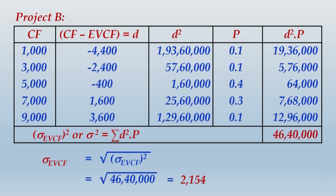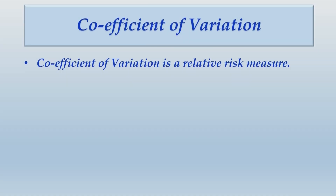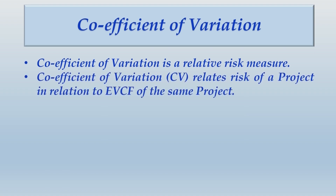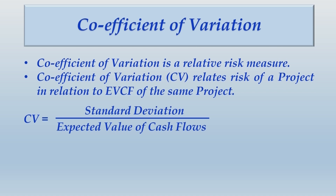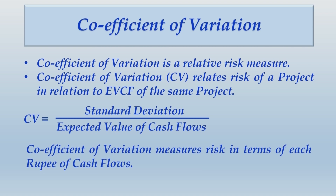Let us now talk about the next segment: coefficient of variation. Standard deviation was the measure of absolute risk. Coefficient of variation is a measure of relative risk. Coefficient of variation relates the risk of a project in relation to the EVCF of the same project. To determine CV, you take standard deviation as numerator and expected value of cash flow as denominator. CV measures risk in terms of each rupee of cash flows.